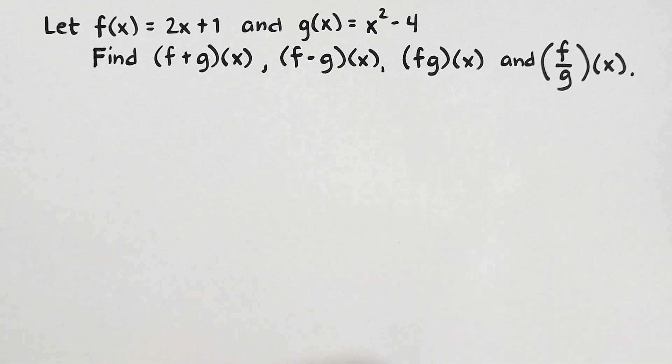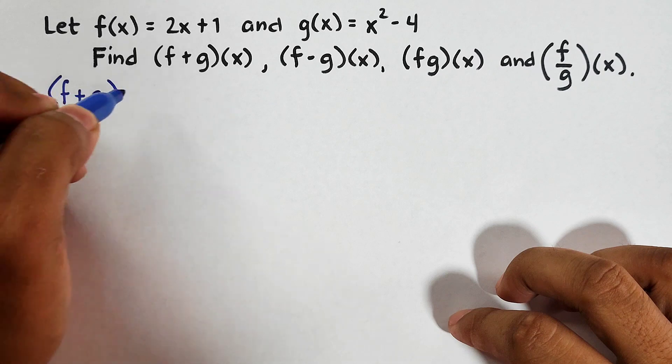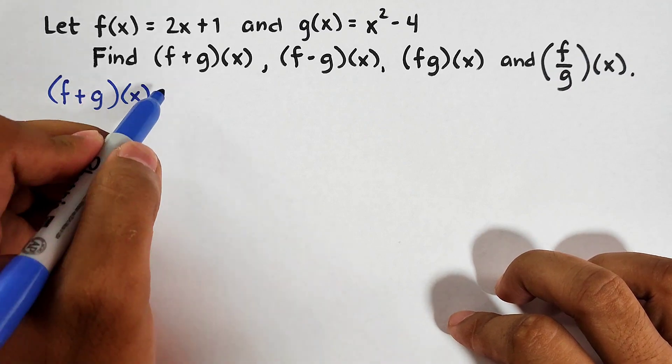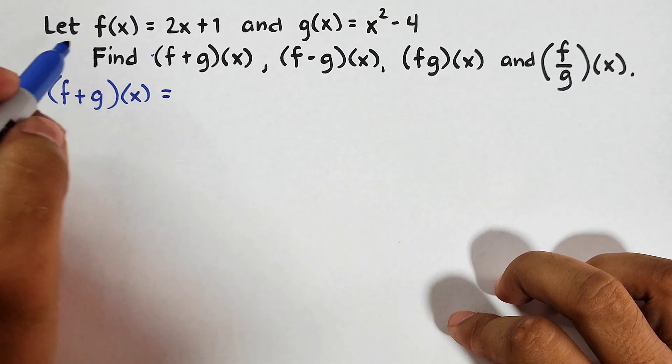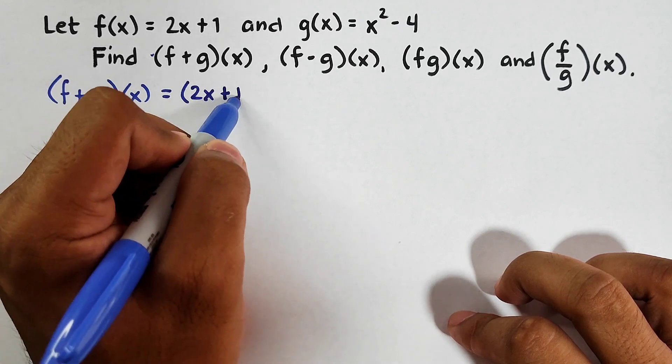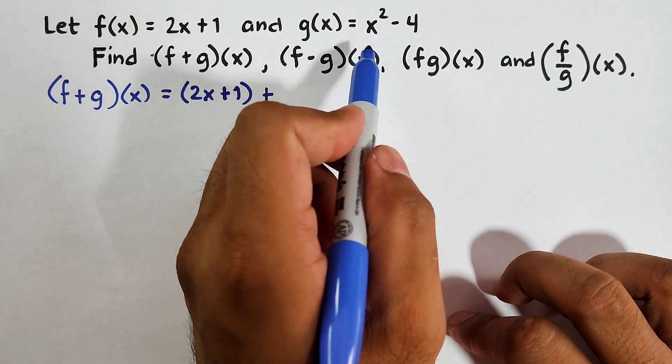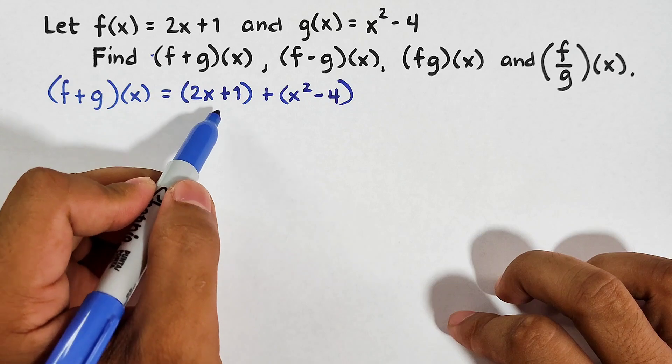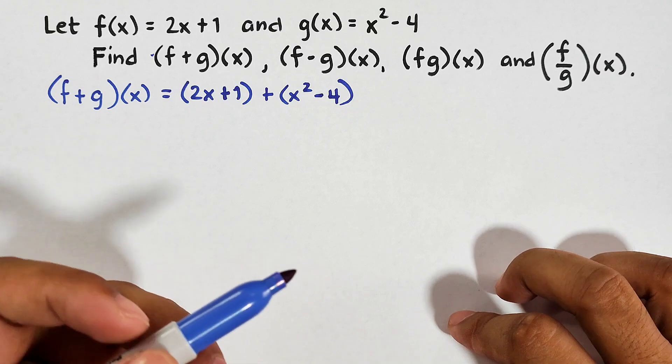So let's start with this one. We have f + g of x. So how are we going to perform this f + g(x) operation? As you can see, the first function is f, we will add them. Our f is equal to 2x + 1, so what we need to do is to enclose this by parentheses. Then plus your function g, which is equivalent to x² - 4. So as you can see, this is your function f, this is your function g, and we will add them. And simply, the rule is combine like terms.